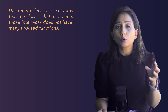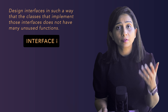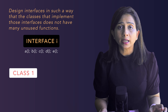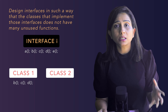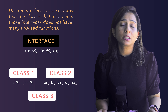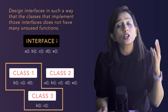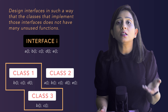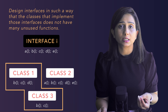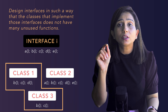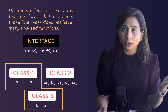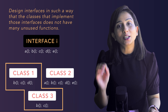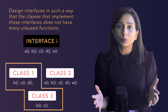The principle is telling you to design your interfaces so that classes implementing them do not have many unused functions. For example, if I design an interface I with functions A, B, C, D, and E, one class might implement only three, another all five, and a third only two. The classes that can't implement all functions end up just writing empty signatures — that's a hint that this principle is being violated.